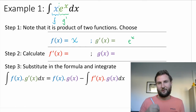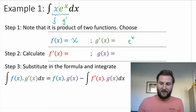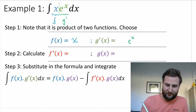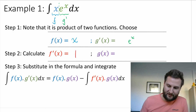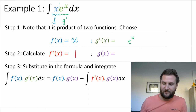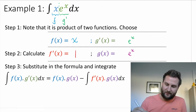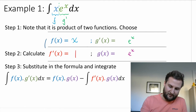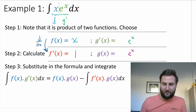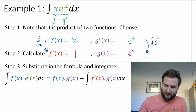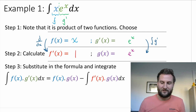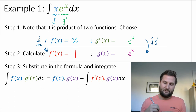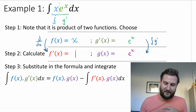Step two is to calculate the opposite. If you choose f, you need to calculate f prime. And if you choose g prime, you need to integrate to find g. The derivative of x is just one — that's easy. And the integral of e to the x is itself — e to the x — so that's also easy. On the left we differentiate to go from f to f prime, and on the right we integrate g prime to find g. If those operations are easy, your whole integration by parts will be easy too.